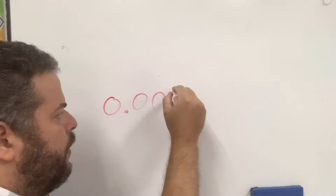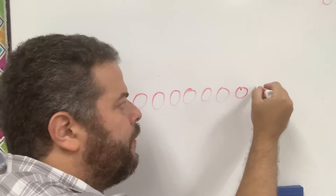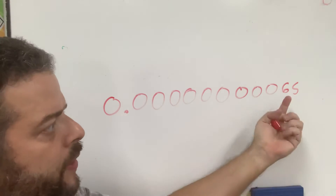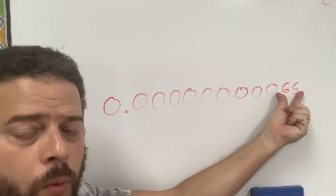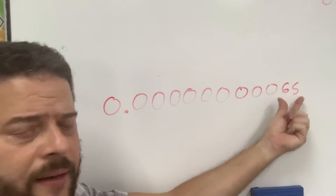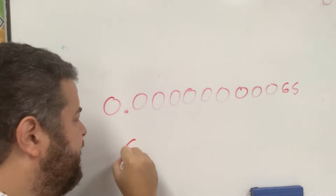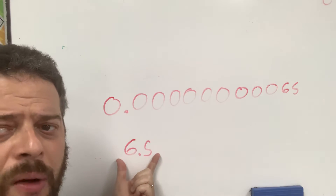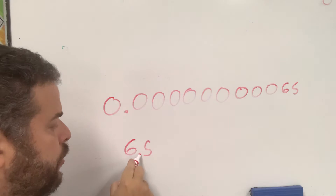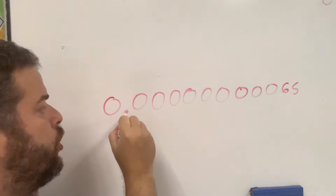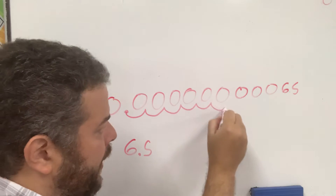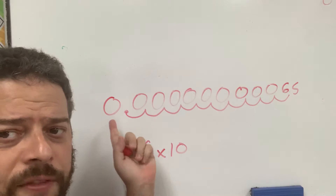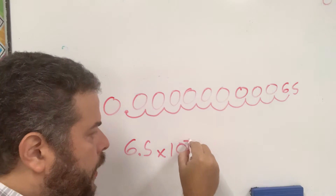Now let's go over a couple of examples of converting normal numbers to scientific notation. Take 0.00000065. What you do is take just the numbers and make sure you have one number that is greater than or equal to 1 and smaller than 10. So with these two digits, that number would be 6.5. Now you move the decimal spot until you reach that position — that's 1, 2, 3, 4, 5, 6, 7, 8, 9, 10 spaces to the right — so it becomes 6.5 times 10 to the negative 10. That means it's an incredibly small number.